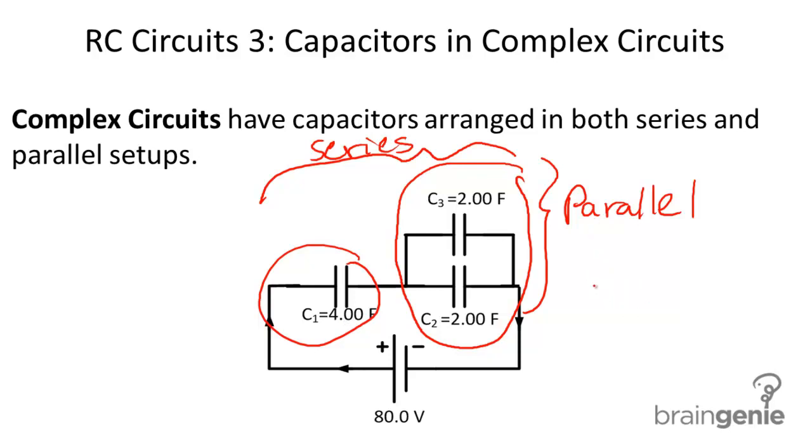So our rules for parallel circuits: the total voltage is going to be equal to the voltage of each capacitor. In addition, the total charge is going to be equal to the sum of the charges.